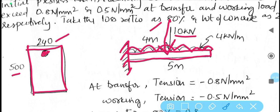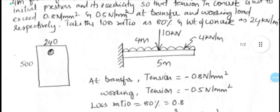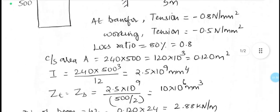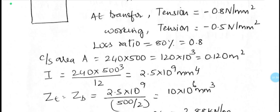Two important conditions are specified: at transfer condition tension is restricted to 0.8 N per mm square and at working condition tension is limited to 0.5. Here the negative sign represents the tension. For tension, sign convention is negative. Also the loss ratio is given as 0.8, that is 80 percent converted into ratio value.